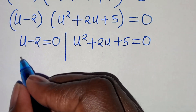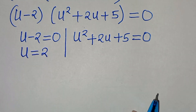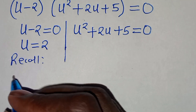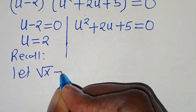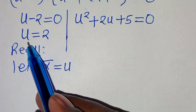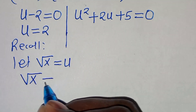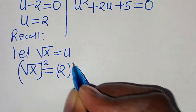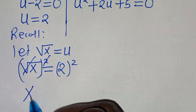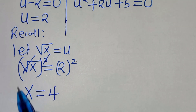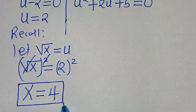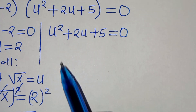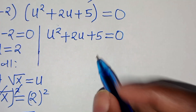From the first factor, u minus 2 equals 0, so u equals 2. Recalling that √x = u, substituting u = 2 gives √x = 2. Squaring both sides, x equals 2² which is 4. So x₁ = 4.